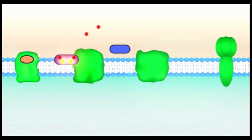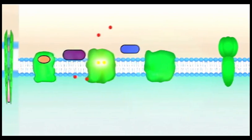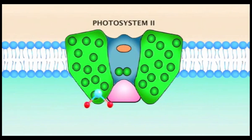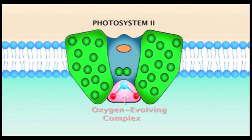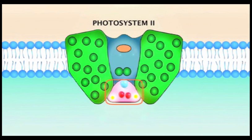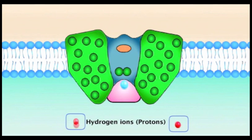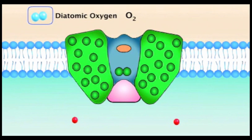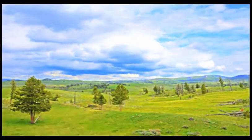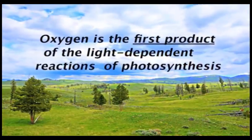At the same time the cytochrome complex is busy pumping protons and transporting electrons, water is being enzymatically split in a specialized part of photosystem II called the oxygen-evolving complex. The splitting of water results in the production of two hydrogen ions or protons, two electrons, and one oxygen atom. The electrons released by this process are used to replace the electrons that were donated by the pair of reaction center chlorophyll molecules. The hydrogen ions produced from water splitting enter the lumen, joining the other protons being pumped in from the cytochrome complex. And the oxygen atom, produced by the splitting, combines with another oxygen atom to create breathable diatomic oxygen, or O2, which ends up being released into the air. Oxygen is the first product of the light-dependent reactions of photosynthesis.